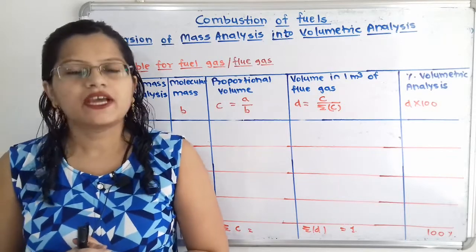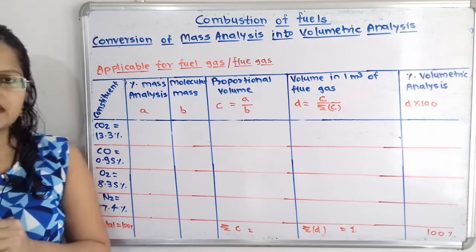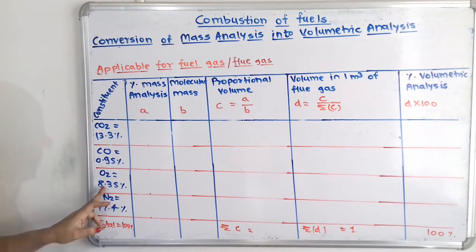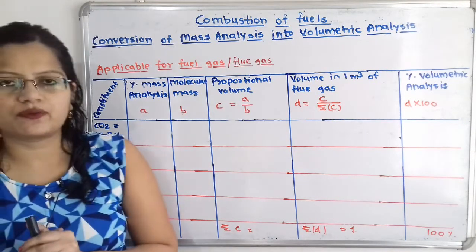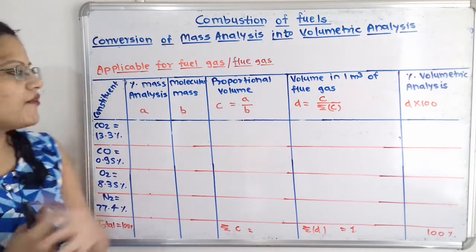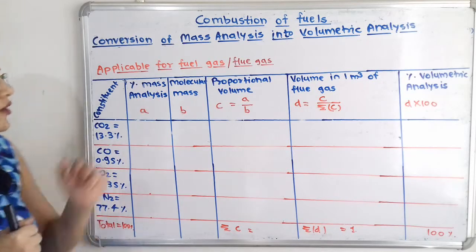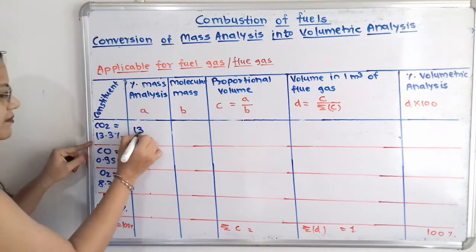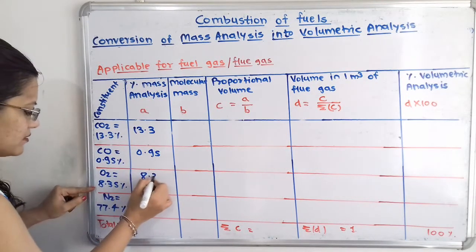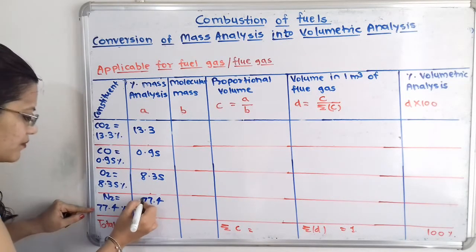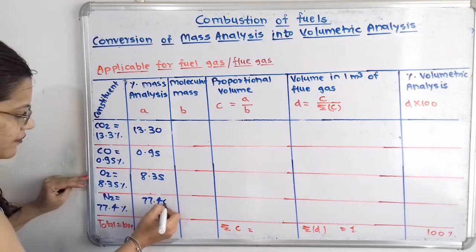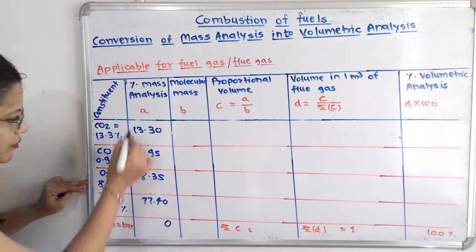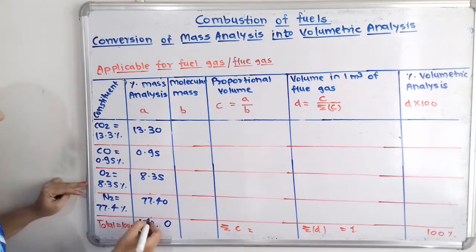We will now solve one problem. The percentage composition by mass for the different constituents is given: CO₂ is 13.3%, CO is 0.95%, O₂ is 8.35%, and N₂ is 77.4%. This is the first column from the given data. For the percentage mass analysis column, we write these values as they are. Adding all these percentages gives 100%.